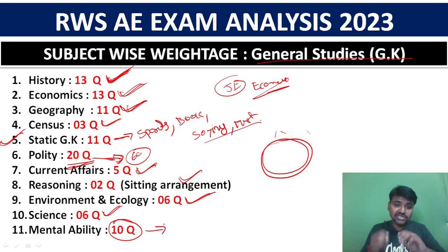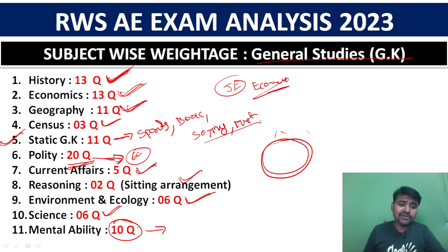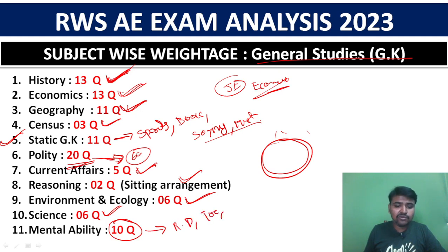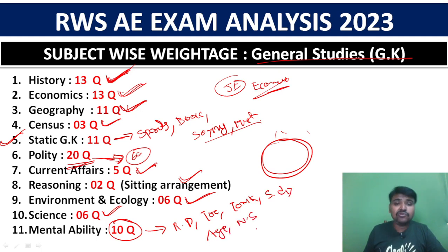Mental ability carries 30 marks and is very important. Topics include ratio and proportion, train problems, tank problems, speed and distance problems, age-related problems, number series, and missing numbers.